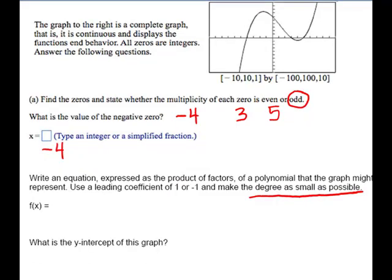The next problem says, write an equation expressed as a product of factors of the polynomial that the graph might represent. Use a leading coefficient of one or negative one and make the degree as small as possible. So that means for each of these zeros, we only want them to occur one time, so their multiplicity will be one instead of some other odd number. The leading coefficient is one or negative one.